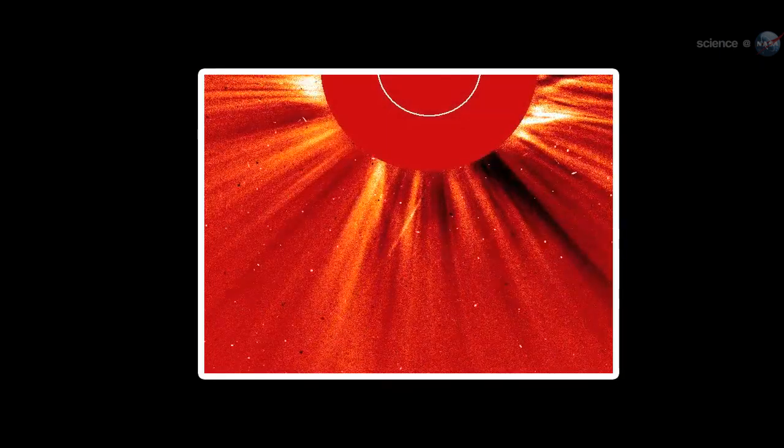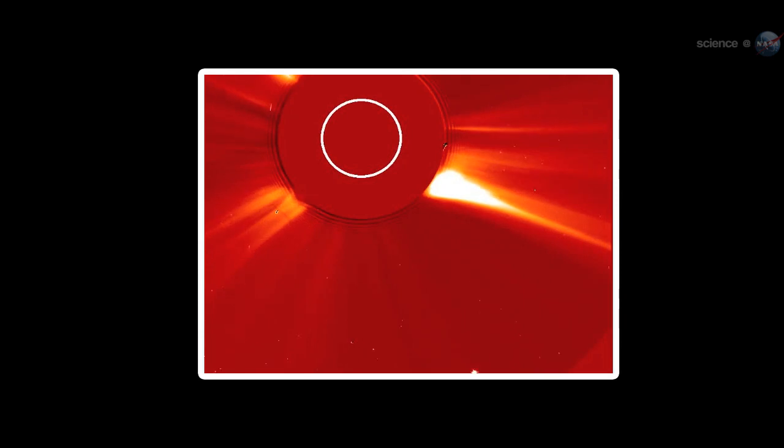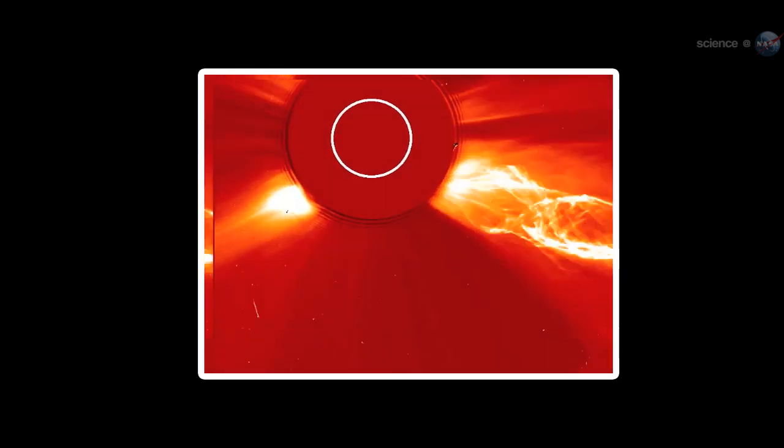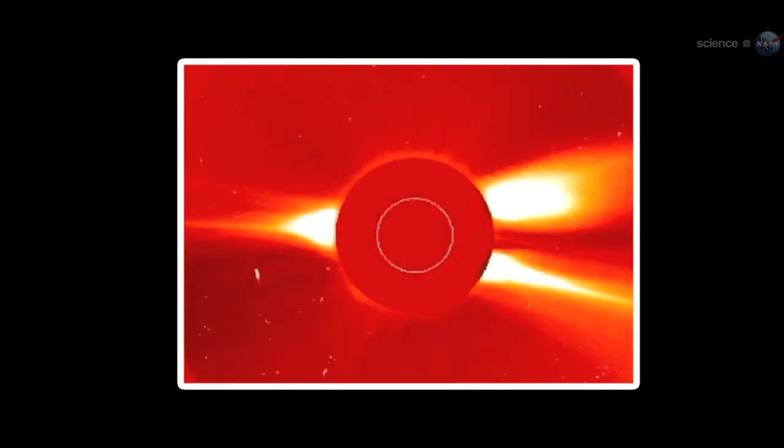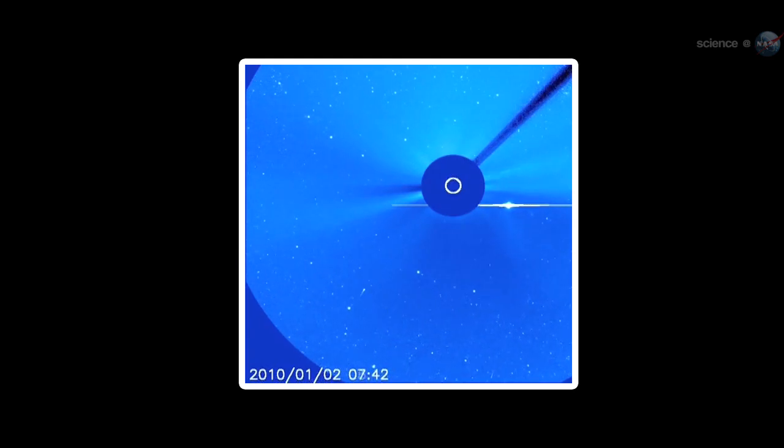Sungrazing comets aren't a new thing. In fact, the Orbiting Solar and Heliospheric Observatory, SOHO, watches one fall toward the Sun and evaporate every few days. These frequent kamikaze comets are thought to be splinters of a giant comet that broke apart hundreds of years ago. Typically, they measure about 10 meters across. Small, fragile, and easily vaporized by solar heat.